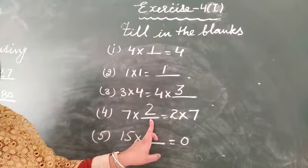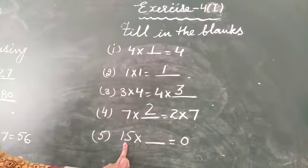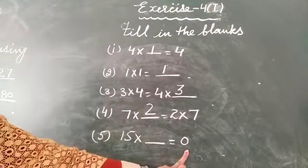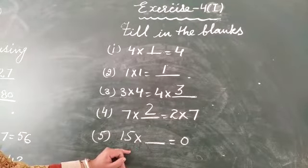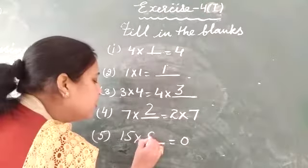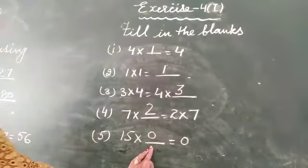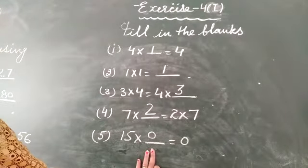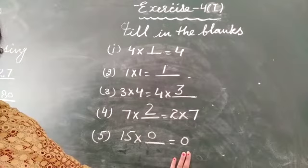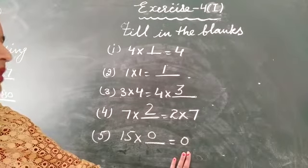Next question is, 15 multiplied dash is equal to 0. 15 multiplied 0, we get 0. Any number multiplied by 0, we always get answer 0. Other all parts are similar, try to do them. Thank you.